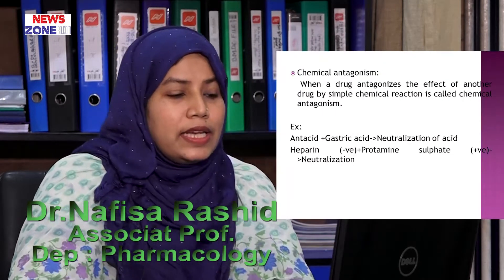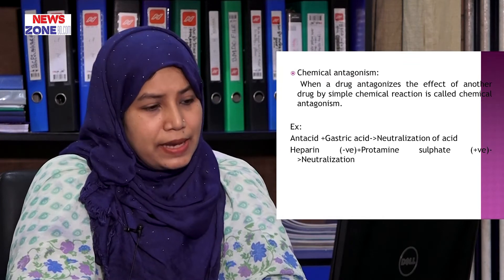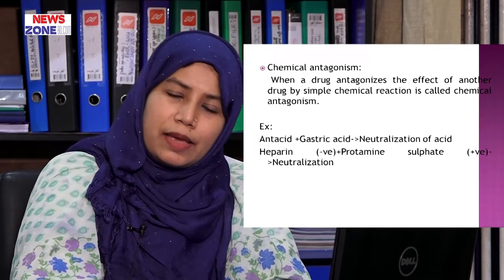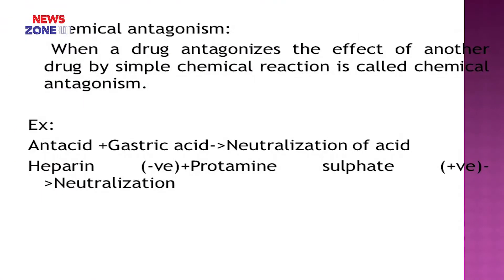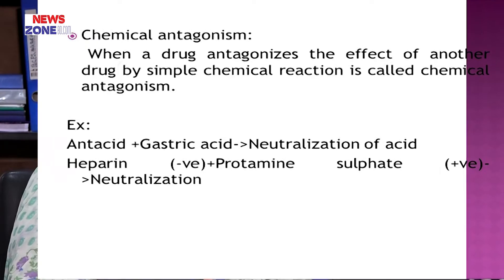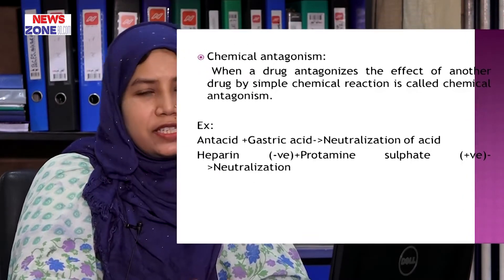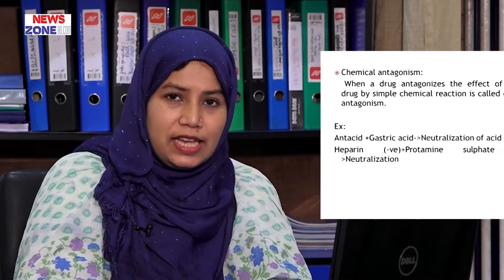Chemical antagonism: when a drug antagonizes the effect of another drug by a simple chemical reaction, this is called chemical antagonism. Examples include antacids causing neutralization of acid — during peptic ulcer, the stomach releases excess hydrochloric acid, and antacids contain alkali which chemically reacts to neutralize the gastric acid. Heparin is an anticoagulant drug that is negatively charged; if its dose is excessive, we give protamine sulphate which is positively charged, and the chemical reaction between them neutralizes the adverse effect.